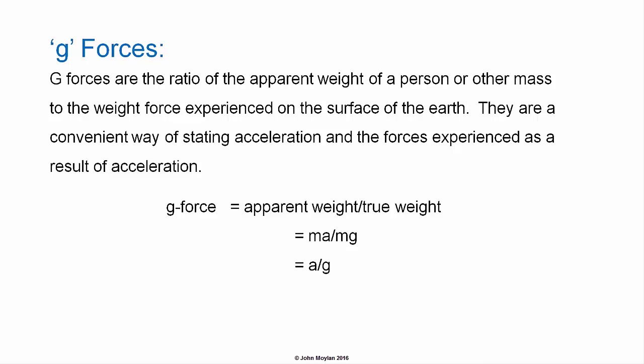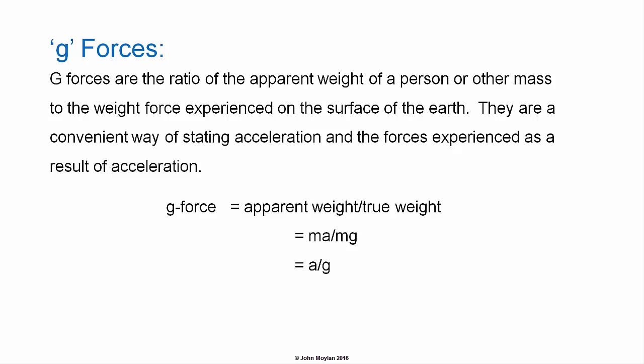The acceleration scale on the graph is marked in g-forces, or G. G-forces are the ratio of apparent weight of a person or other mass to the weight force experienced on the surface of the Earth. They are a convenient way of stating acceleration and the forces experienced as a result of acceleration. G-force is equal to apparent weight over true weight, is equal to mass times acceleration, divided by mass times acceleration due to gravity, which is equal to the acceleration experienced divided by acceleration due to gravity on the surface of the Earth. G-forces are usually maintained below 4G during both launch and re-entry for manned flight, in order to avoid either injury or death of the crew.